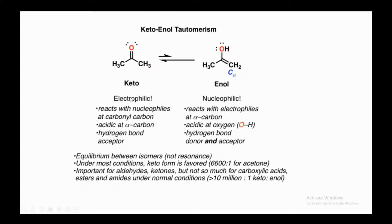The keto form is electrophilic — electron deficient — so any nucleophile can attack on the carbonyl carbon. The alpha carbons adjacent to the carbonyl are acidic, and hydrogen acts as a bond acceptor. The enol form is nucleophilic in nature, reacting with electrophiles at the alpha carbon, and is acidic at oxygen — the OH group is an acidic hydrogen bond donor and acceptor, since oxygen has lone pair electrons.